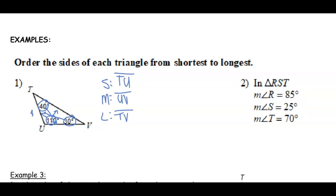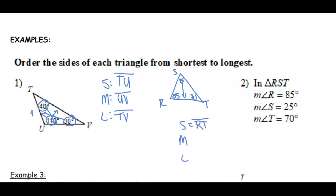Even if we don't have a triangle diagram, we can draw one. For triangle RST: if R is 85, S is 25, and T is 70, we label small, medium, large. The smallest angle is 25 degrees, so opposite that is RT. The medium angle is 70 degrees, giving side SR. And the largest angle gives side ST.